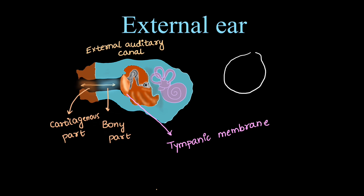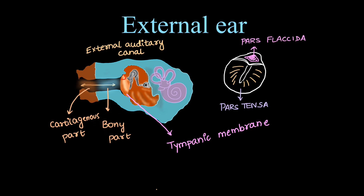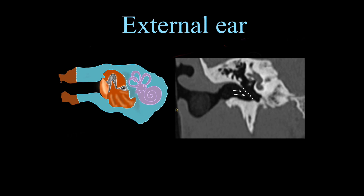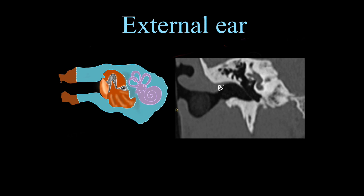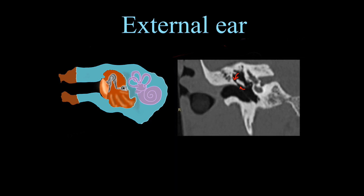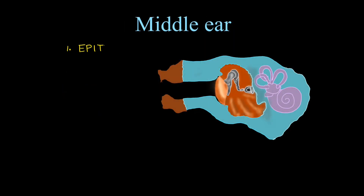Next we have the tympanic membrane, which has two parts. The lower major portion is the pars tensa and the small portion above is called pars flaccida. On CT, the tympanic membrane is best seen on coronal sections. The attachment of pars flaccida to the bony part is the scutum, which is eroded in cholesteatoma or CSOM. The small space in the epitympanum between the scutum and the malleus is called the Prussak's space, which is the starting point for cholesteatoma.